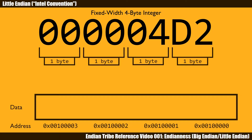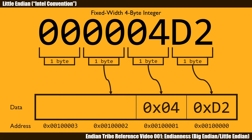First we look at little Endian. With little Endian, the least significant byte goes in first. In other words, the least significant byte goes into the lowest memory address. The rest then follows.